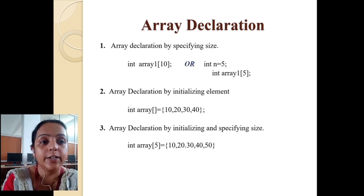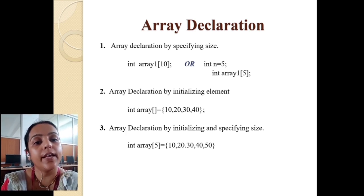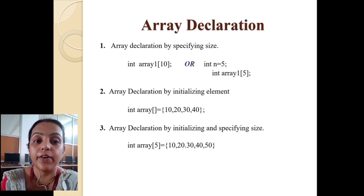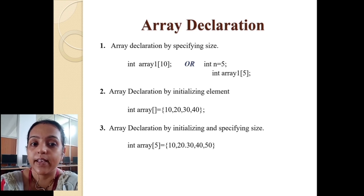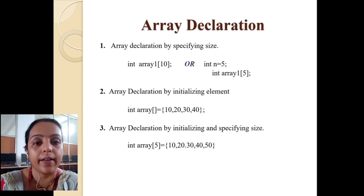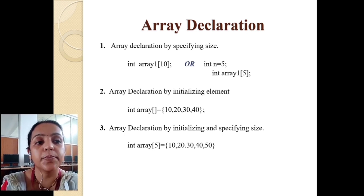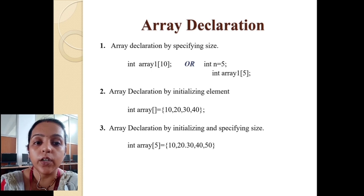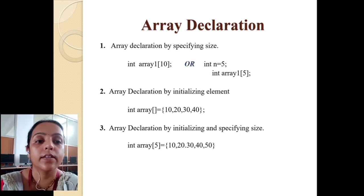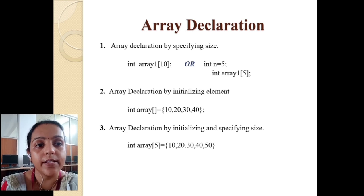The second type is array declaration by initializing the elements. Here we write: integer array1[] = {10, 20, 30, 40} — the size is not declared in the brackets, and the compiler determines the size automatically. The third type is array declaration by initializing and specifying the size: integer array1[5] = {10, 20, 30, 40, 50}. In this third type, we use both — specifying the size and initializing the values.